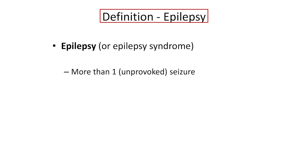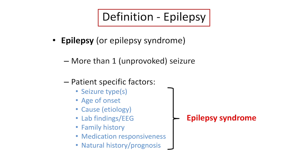We like to describe epilepsy syndromes. An epilepsy syndrome involves different kinds of seizures, but also includes information about other aspects of clinical detail: when it began, the age, what caused it, what the EEG findings are, what the family history or genetics is, what medicines work and which don't, and what happens over time. So an epilepsy syndrome has a lot of information beyond just seizure. Seizure is what you see someone do; epilepsy is more than one seizure with all this other information included.